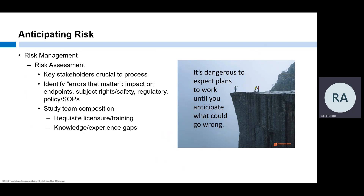Risks could be big or small. For this initial assessment, look out for the errors that matter—deviations or unanticipated problems that would impact the study's endpoint data, the rights, safety, and well-being of subjects, or result in non-compliance with regulations or institutional policy. We also need to consider whether the study team has the licensure, experience, and knowledge to successfully execute the trial. Are there aspects that require specialty care, or team members new to the institution or clinical research who would benefit from additional support?